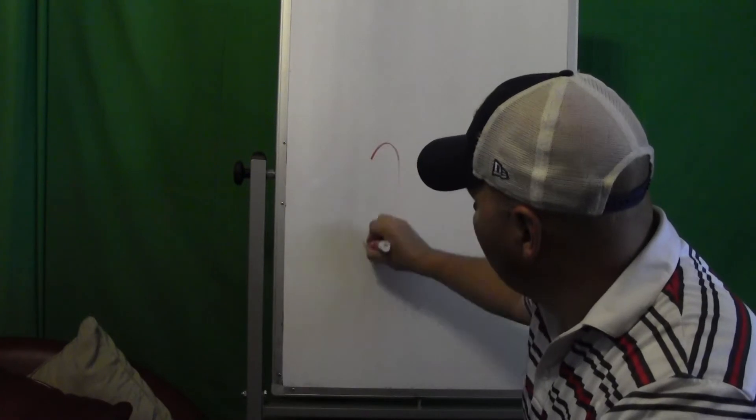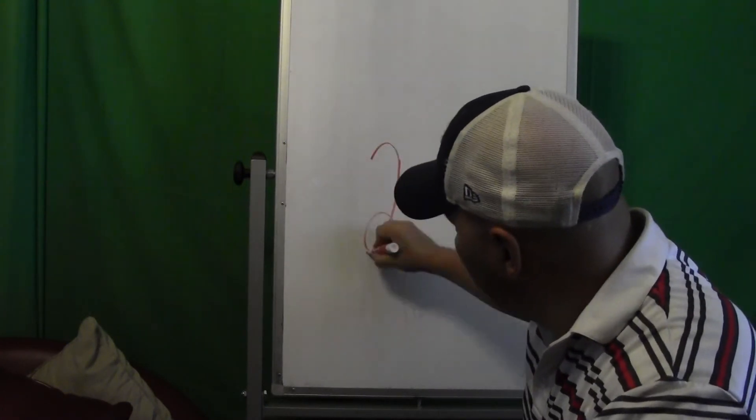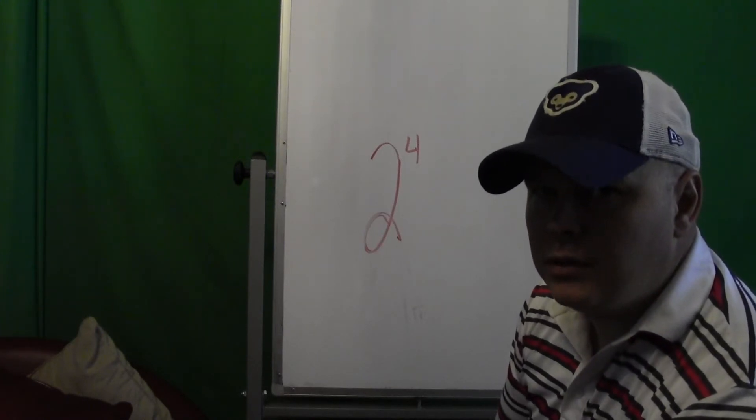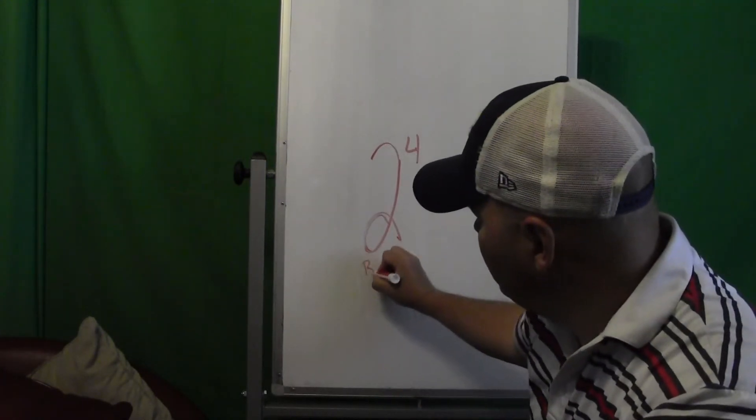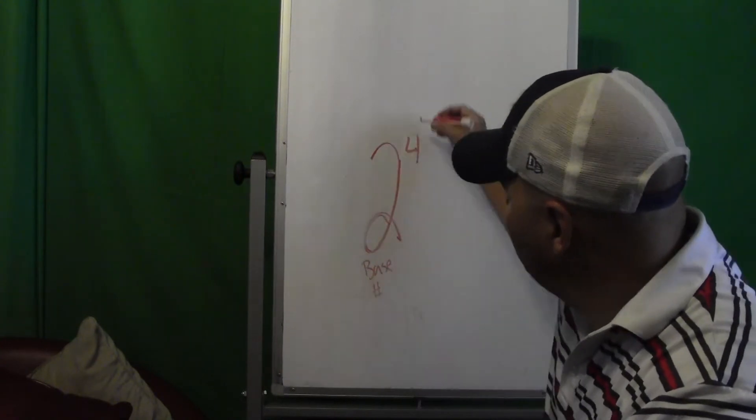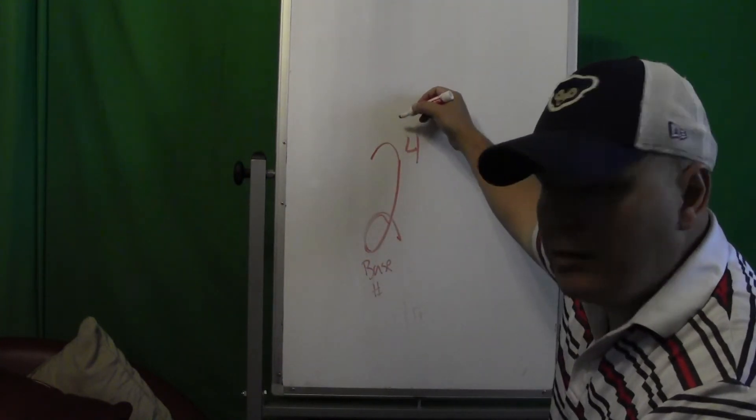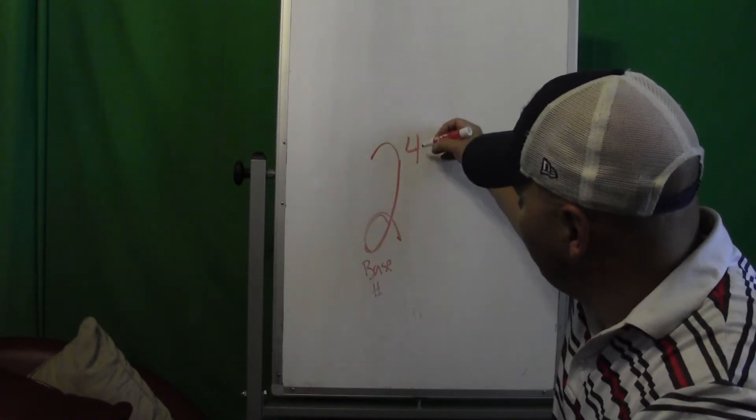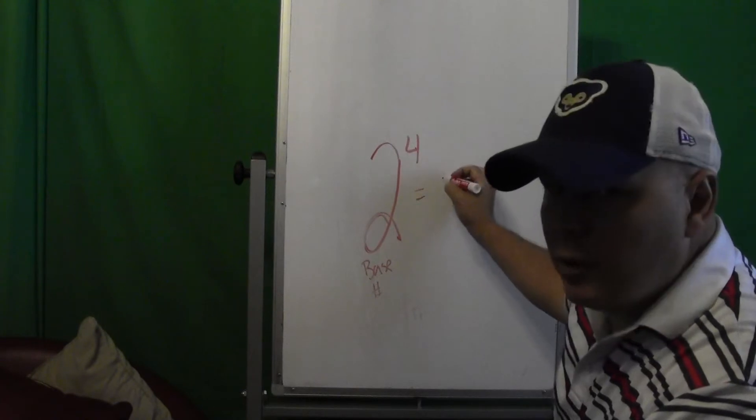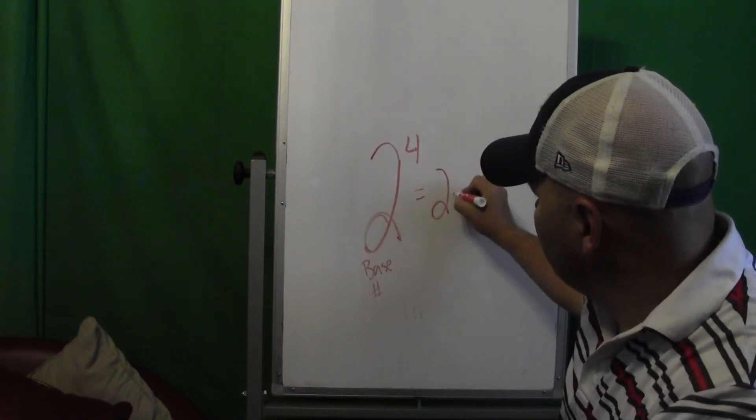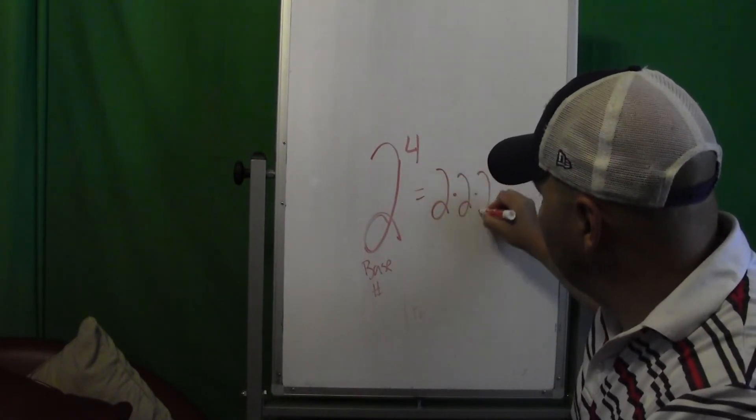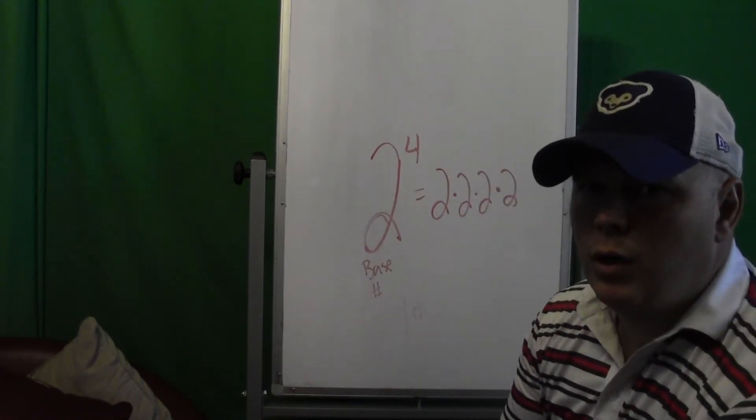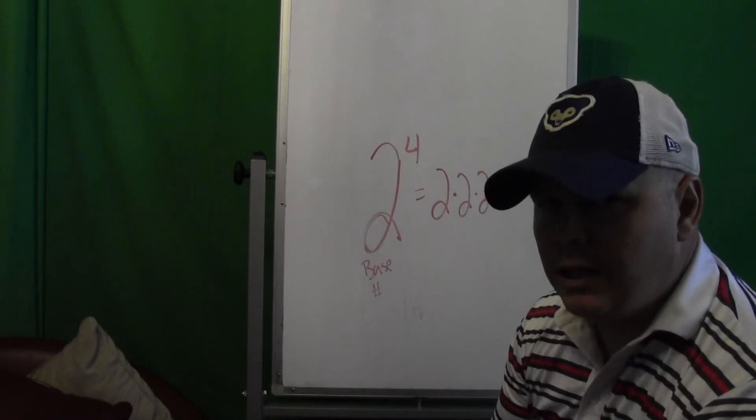That's an exponential notation. My base number is 2, my exponent is 4. So I'm taking my base number times itself four times. That tells me how many times I multiply it by itself: four. So if I wrote that in expanded form then it would look like this.